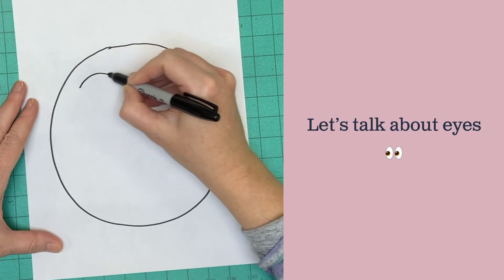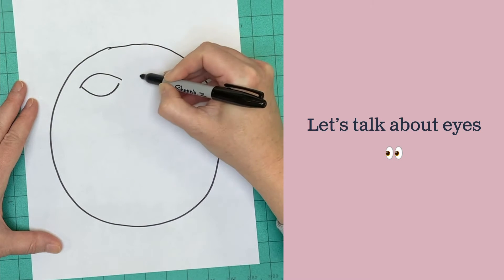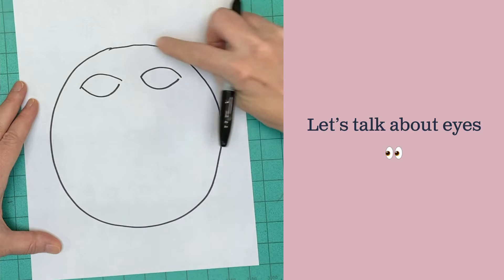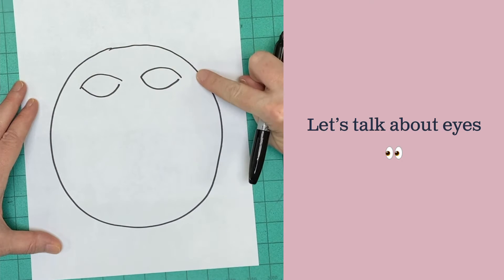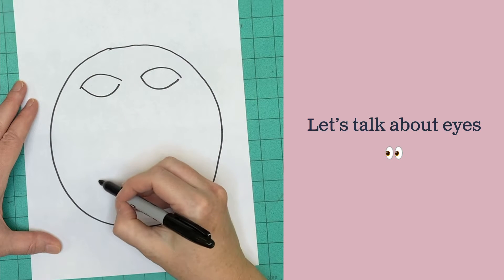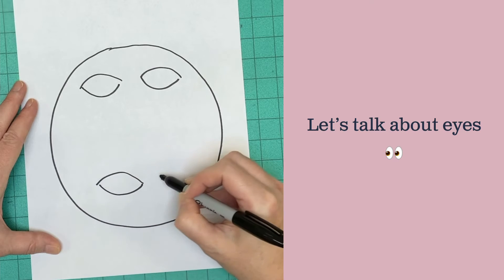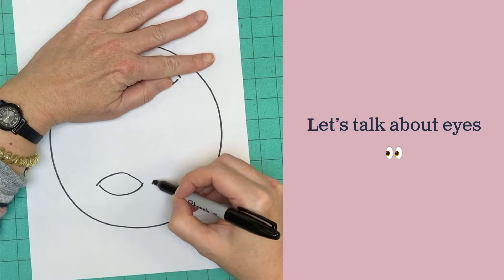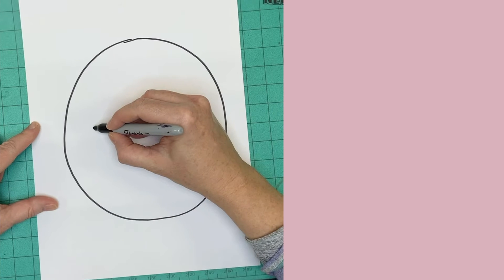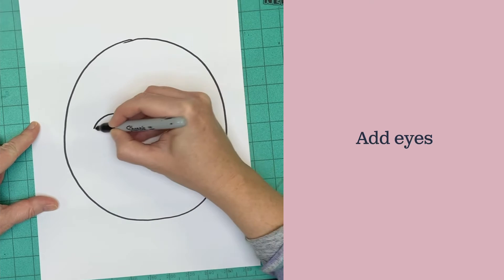When you get ready to put in your eyes, don't put your eyes at the very top of your head. That leaves way too much space for everything else. And also, don't put them down at the very bottom of your circle. Then there's no space. Your eyes need to go in the middle.